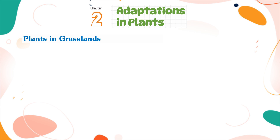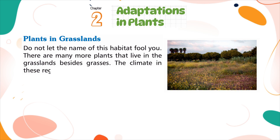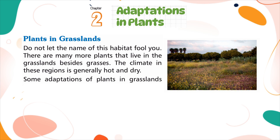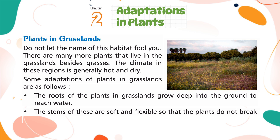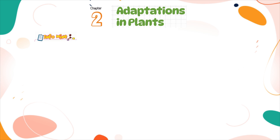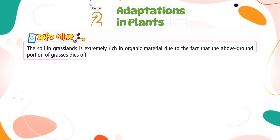Plants in Grasslands. There are many more plants that live in the grasslands besides grasses. The climate in these regions is generally hot and dry. The roots of the plants in grasslands grow deep into the ground to reach water. The stems are soft and flexible so that the plants do not break when strong winds blow. The soil in grasslands is extremely rich in organic material due to the fact that the above-ground portion of grasses dies off annually, enriching the soil.